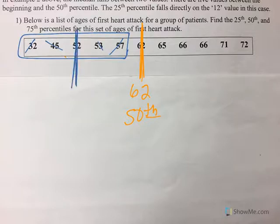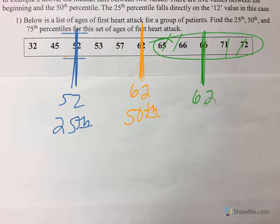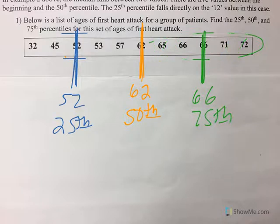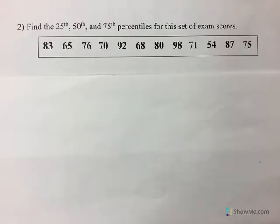Then I find the median of the upper half - 66. So 66 is my 75th percentile. And now if you look in front of my first vertical line I have two numbers, between my next two vertical lines I have two numbers, two numbers, two numbers - that's what you want. In this last one we got to put them in order least to greatest first.